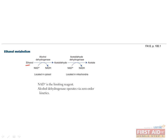The reaction for the metabolism of ethanol is shown here. Ethanol is first oxidized to acetaldehyde by alcohol dehydrogenase, which occurs in the cytosol. Next, acetaldehyde is further oxidized to acetate by acetaldehyde dehydrogenase — this second step occurs in the mitochondria, not in the cytosol. NAD is used in both reactions as the oxidizing agent and is a limiting factor in this reaction. Alcohol dehydrogenase operates via zero-order kinetics, meaning its rate does not change based on the concentration of alcohol.